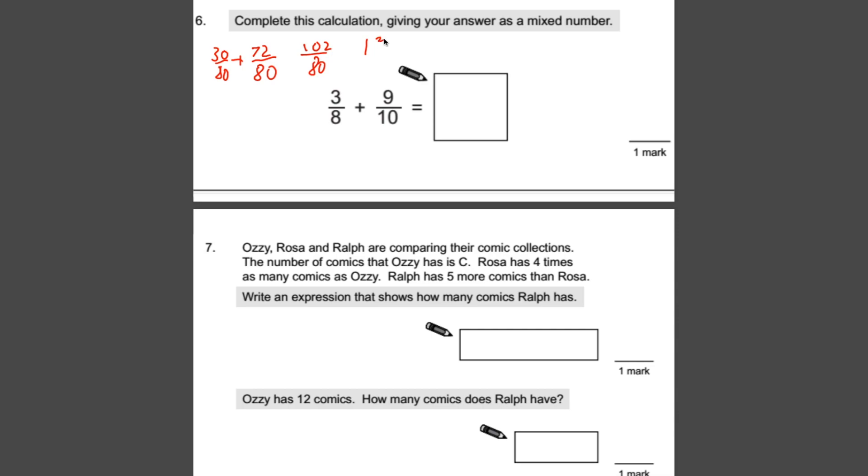And what's left is 22 eightieths. So that is now a mixed number. And we can't take any more whole numbers out of that. That is what we've got, our whole number and our remaining fraction. It doesn't say simplify that, so you don't need to fiddle with a fraction. You can just leave it as that. So our answer is one whole and 22 eightieths.